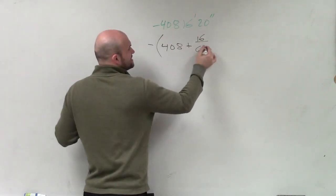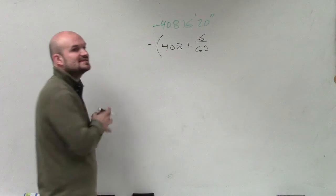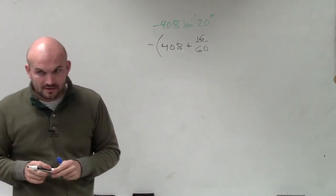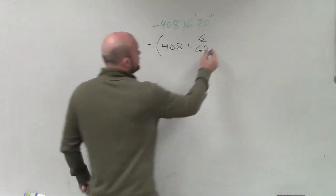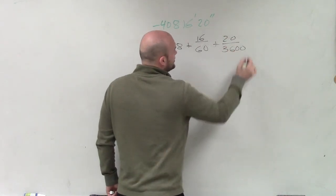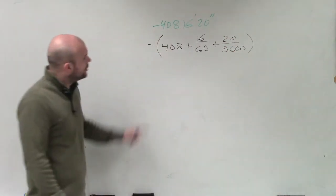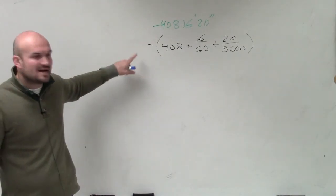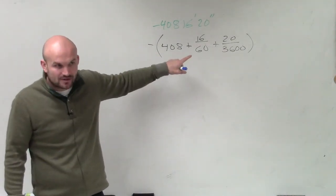Since there's 60 minutes in a degree, you're adding 16 minutes out of 60 in your degree plus 20 seconds out of 3,600 seconds. Notice how my negative is outside of it because I have to add these to my angle.